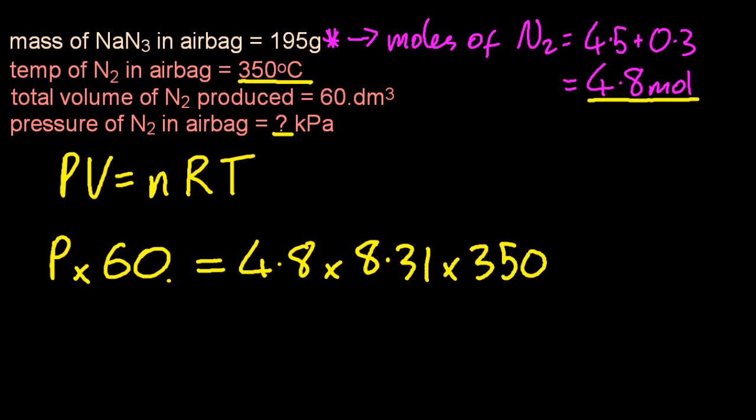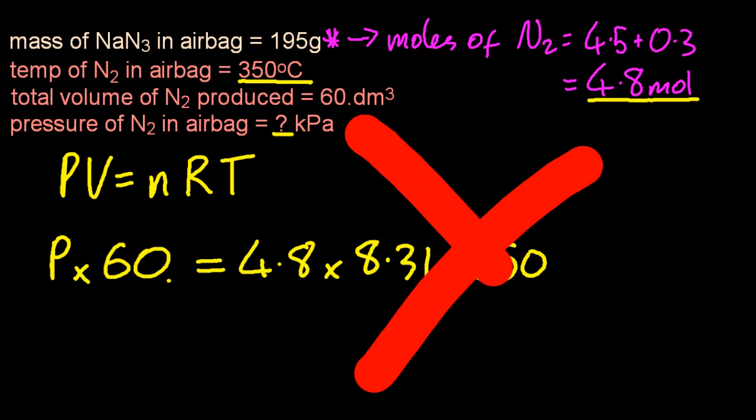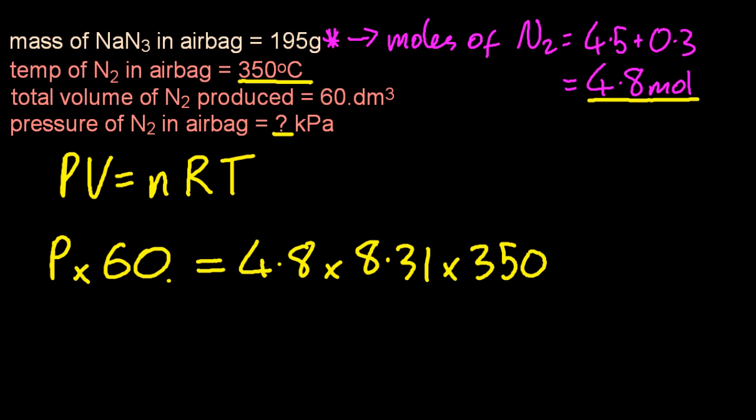Temperature, 350. No. No and no. It's got to be in Kelvin. If it's not in Kelvin, then it's wrong. So let's add 273 to that temperature to get into Kelvin.